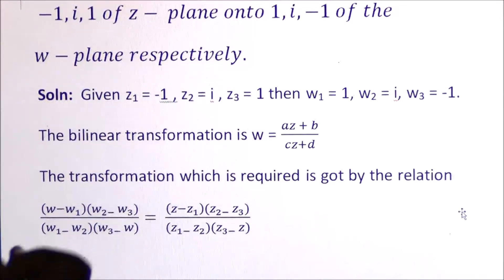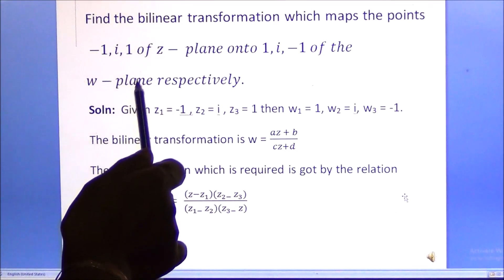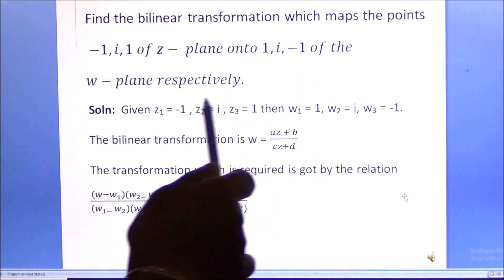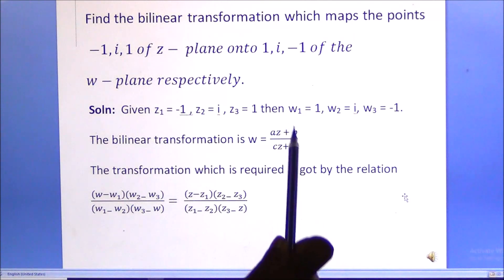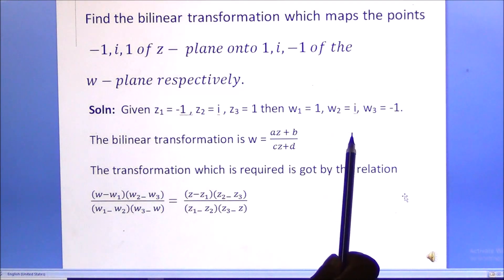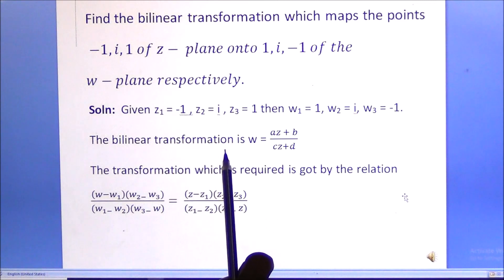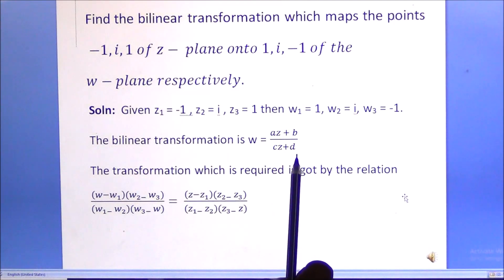Problem 1: Find the bilinear transformation which maps the points -1, i, 1 of the Z-plane onto 1, i, -1 of the W-plane respectively. Given Z1 = -1, Z2 = i, Z3 = 1, and W1 = 1, W2 = i, W3 = -1. The bilinear transformation is W = (aZ + b) / (cZ + d).